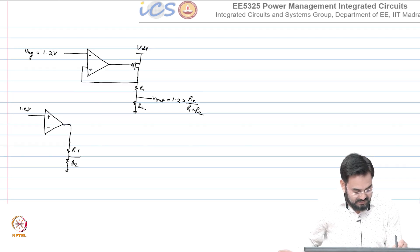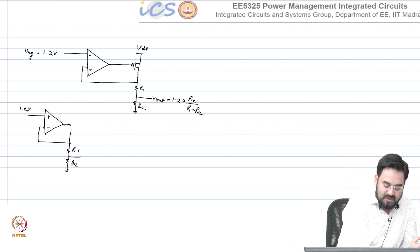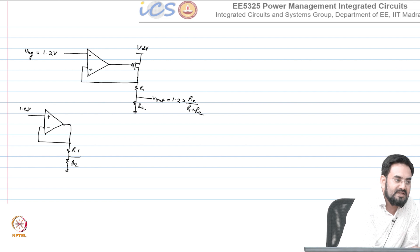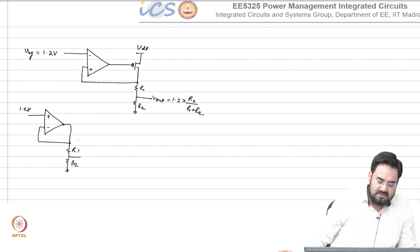This is one way, the only thing is it's going to cost you one op-amp and two more resistors, which means more area and more power consumption. Most of the time if you just need one voltage which is lower than 1 volt, 0.6 volt or so, you can use this sub-1 volt bandgap.